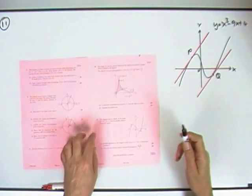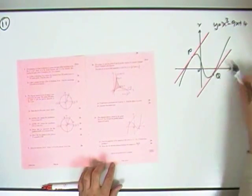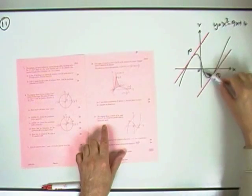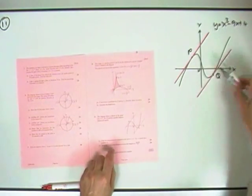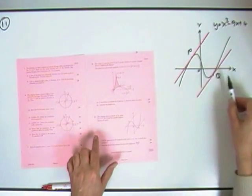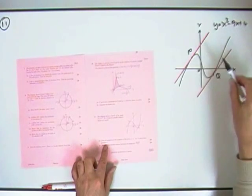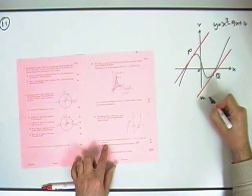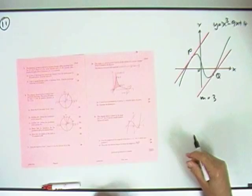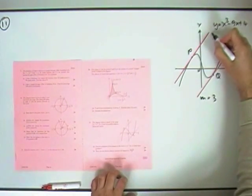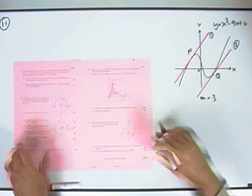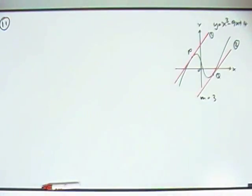So the last question in the 1999 paper, question 11, we've got tangents to a curve. We've got this cubic curve here with two parallel tangents drawn, touching it at P and Q. It says the gradient of each of them is 3. Take note of that. Then it says find the equation of these two tangents. I'll give them numbers - I'll call that 1, I'll call that 2, for the first six marks.